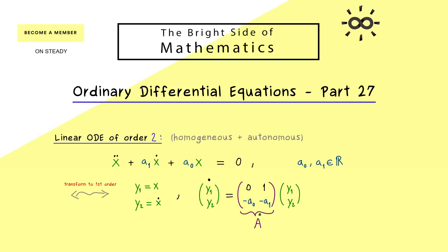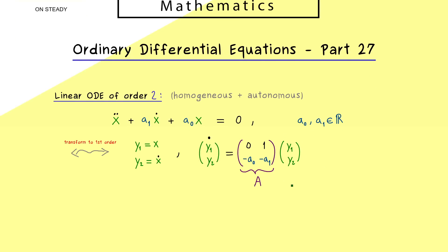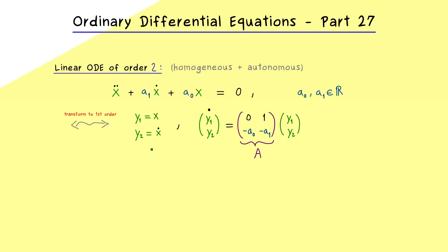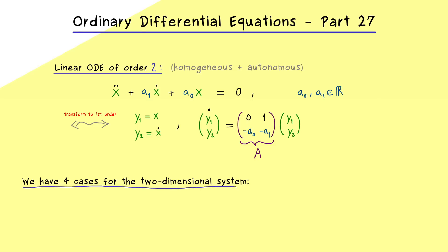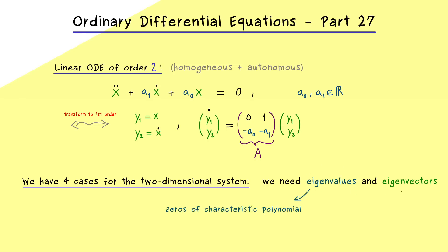We can immediately use the result from the last video, which tells us that two-dimensional linear systems are fully understood. More concretely, we can distinguish four different cases and find all solutions. To formulate these solutions, we need two things: first, the eigenvalues of A, and second, the corresponding eigenvectors — meaning the zeros of the characteristic polynomial, and the non-zero elements of the corresponding eigenspaces.